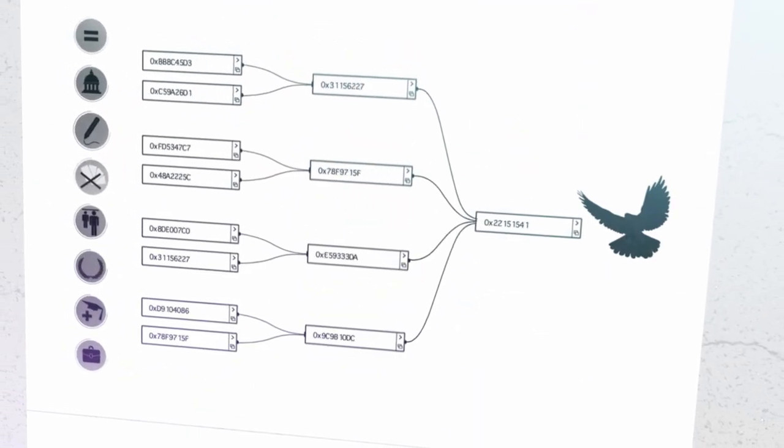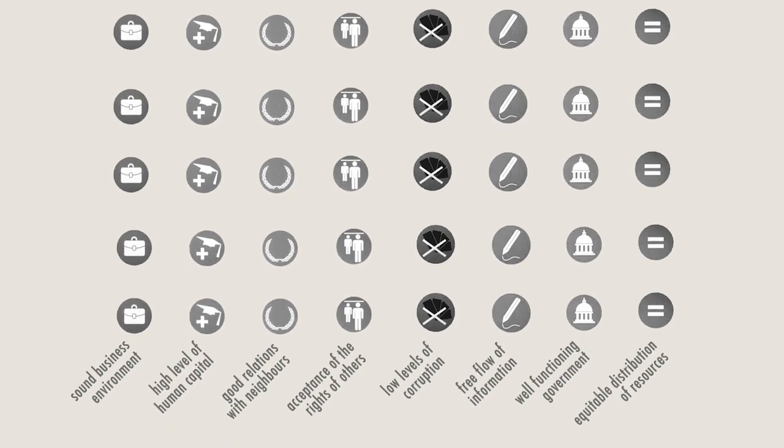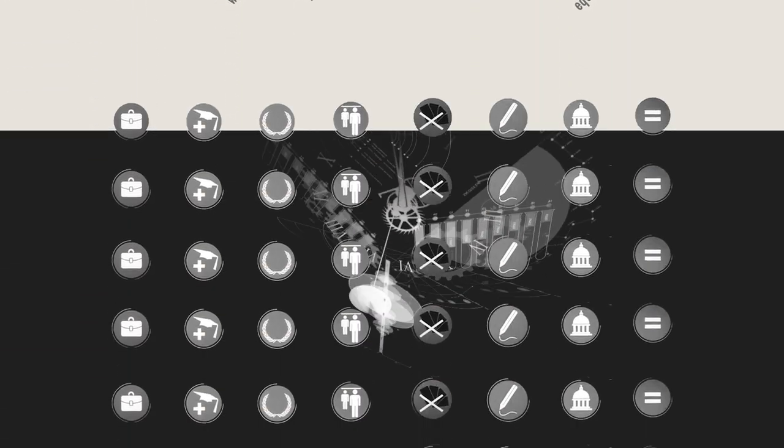The Global Peace Index shows that we need to invest in the attitudes, structures and institutions that underpin peaceful societies in these countries and others before we can expect to see an improvement in the levels of peace.